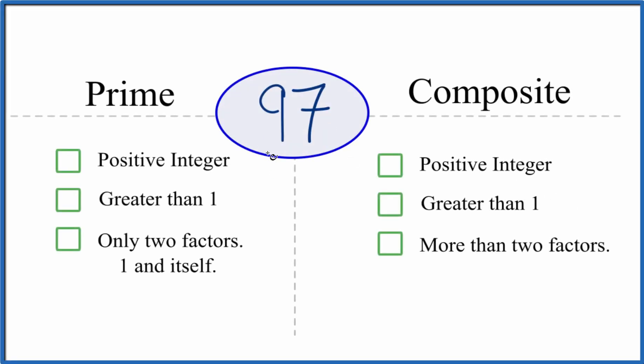If you're asked to figure out whether 97 is prime or composite, here's how you do it. Let's look first to see whether 97 is a prime number. It's a positive integer - yep, it's a positive integer.